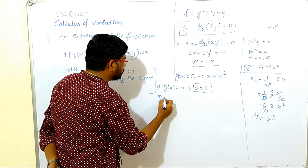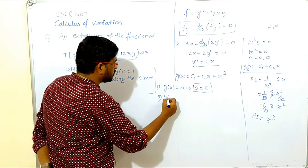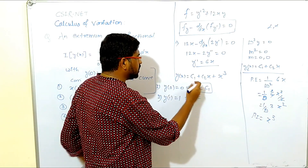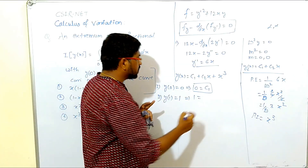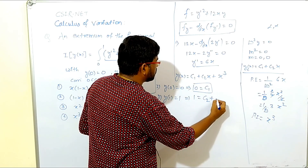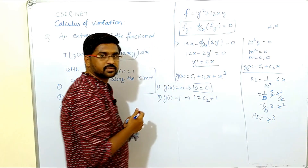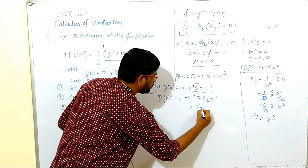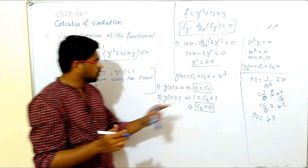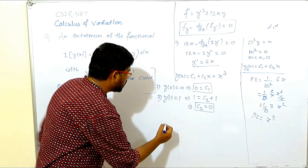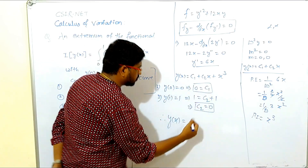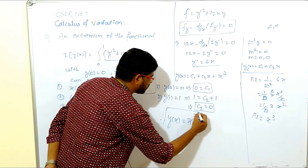Using the second condition y(1) = 1: substituting x = 1 with c1 = 0, we get 1 = c2·(1) + 1³, so 1 = c2 + 1, which gives c2 = 0. With c1 = 0 and c2 = 0, the general solution reduces to y(x) = x³.